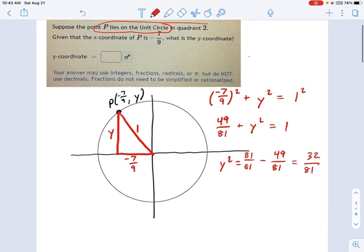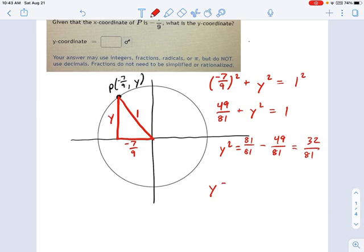Uh, yep, that looks good. So then, why? Don't forget to square root it. Why is the square root of 32 over 81? And you can just write that if you want, or you could write the square root of 32 over 9. It will accept both answers.